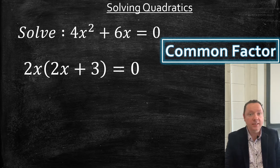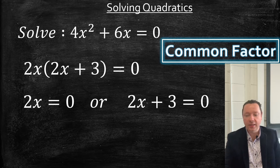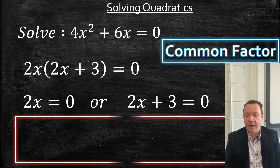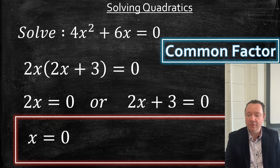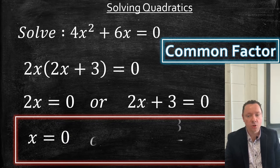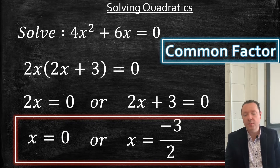That means we've got 2x equals 0, and we've also got 2x plus 3 equals 0. Taking the first equation, x must be 0. For the second equation, I take the 3 over to the other side to get minus 3, then divide by the number in front of x, which is 2. So we can leave it as a fraction, minus 3 over 2, or if you prefer, minus 1.5.